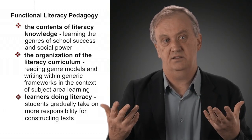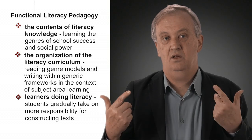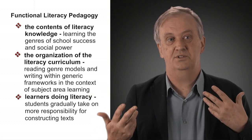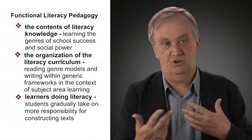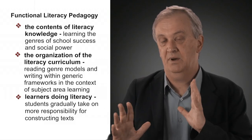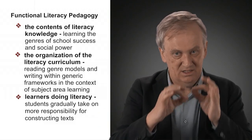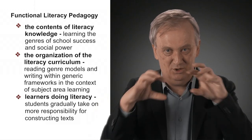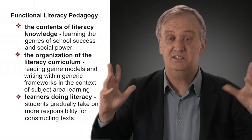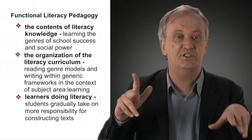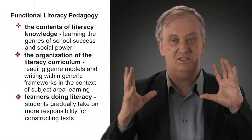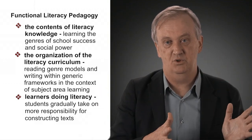What functional literacy does is focus very much on learning the genres of school success and social power — what these genres are, and what literacy gives us. It's about being explicit about these. But unlike didactic pedagogy, which tends to start with small pieces and put the jigsaw puzzle together and may never arrive at a full picture, functional literacy starts with the question of what the purpose of the text is, then how the text varies because purposes are different. It starts with the whole text and its purpose and moves down from there.